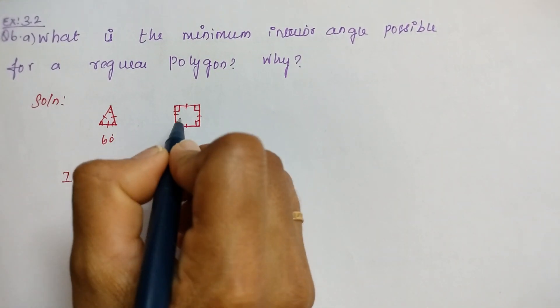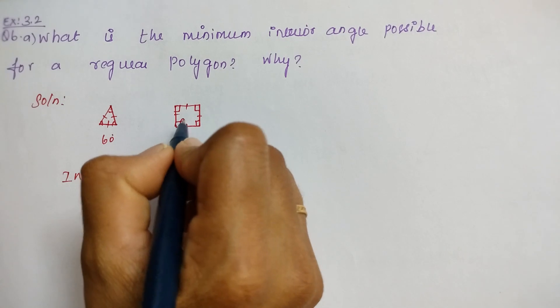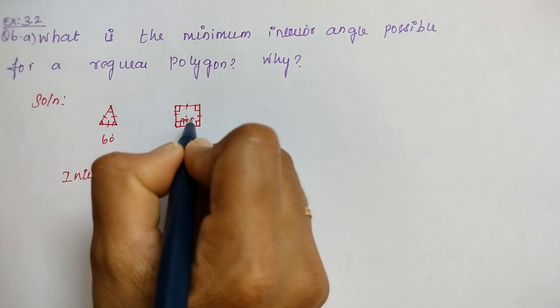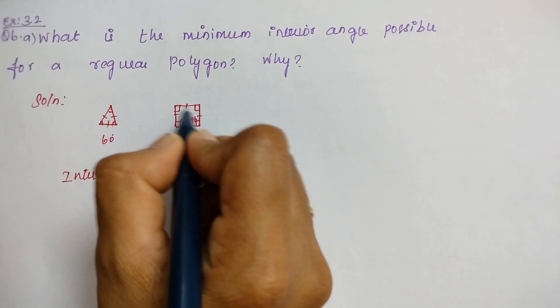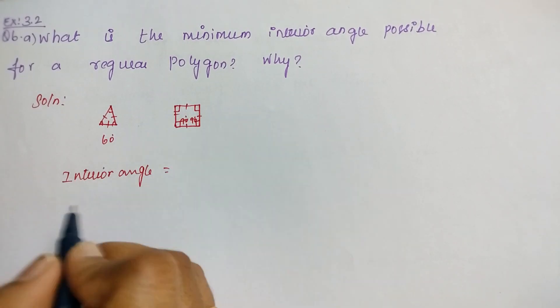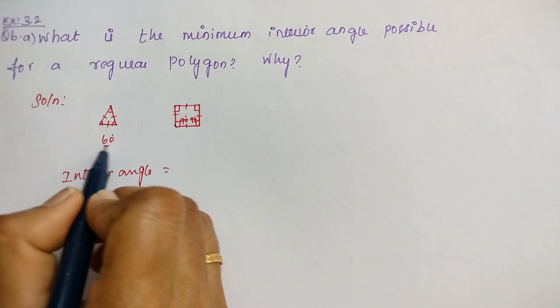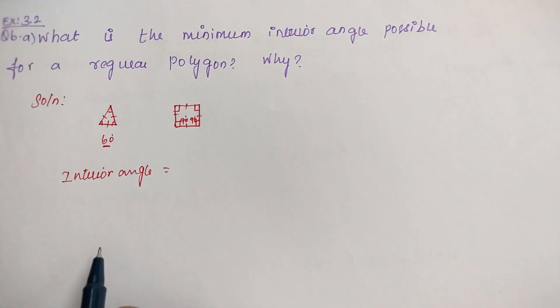But for this square, each interior angle is 90 degrees. We know each angle is 90 degrees. Among these two, 60 is the minimum angle.